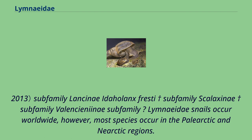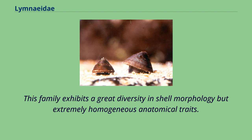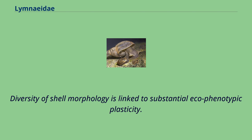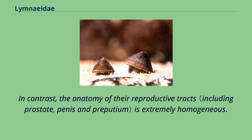Limeidae snails occur worldwide; however, most species occur in the Palearctic and Nearctic regions. An unidentified fragmentary Limnia from deposits of the Meyer Desert Formation was the first freshwater snail recorded from Antarctica. This family exhibits great diversity in shell morphology but extremely homogeneous anatomical traits. Diversity of shell morphology is linked to substantial eco-phenotypic plasticity. Hubbendick illustrated this point by compiling up to 1,143 species names, a large number of which he synonymized. In contrast, the anatomy of their reproductive tracts is extremely homogeneous.